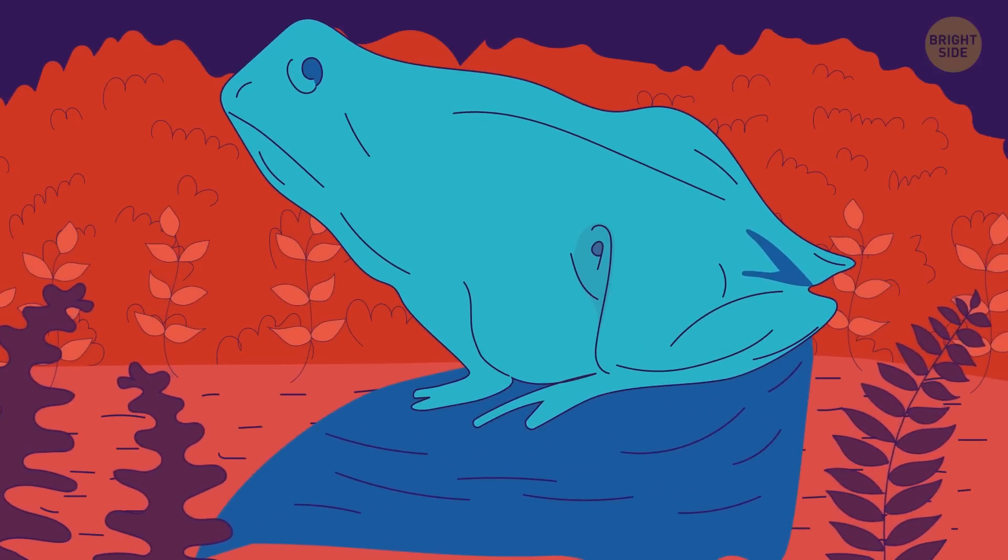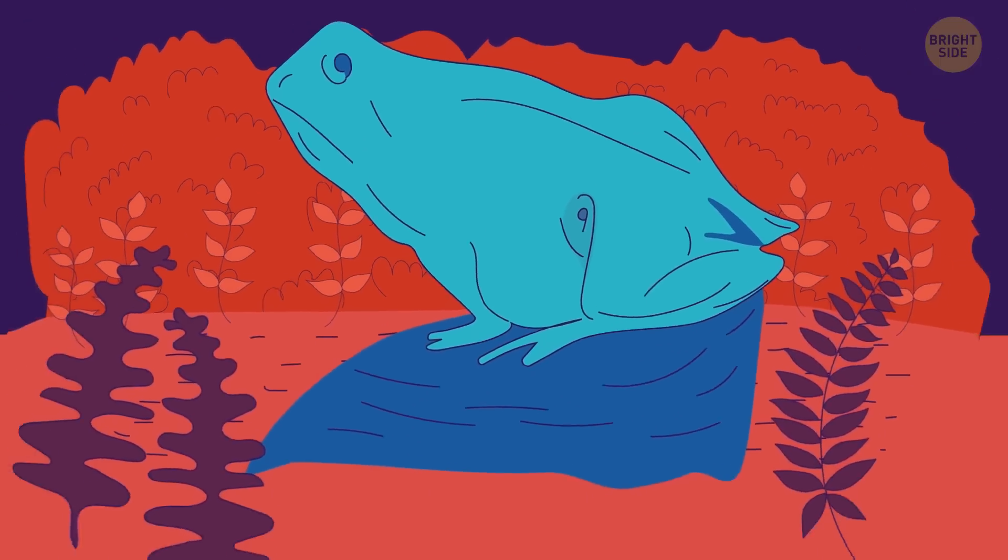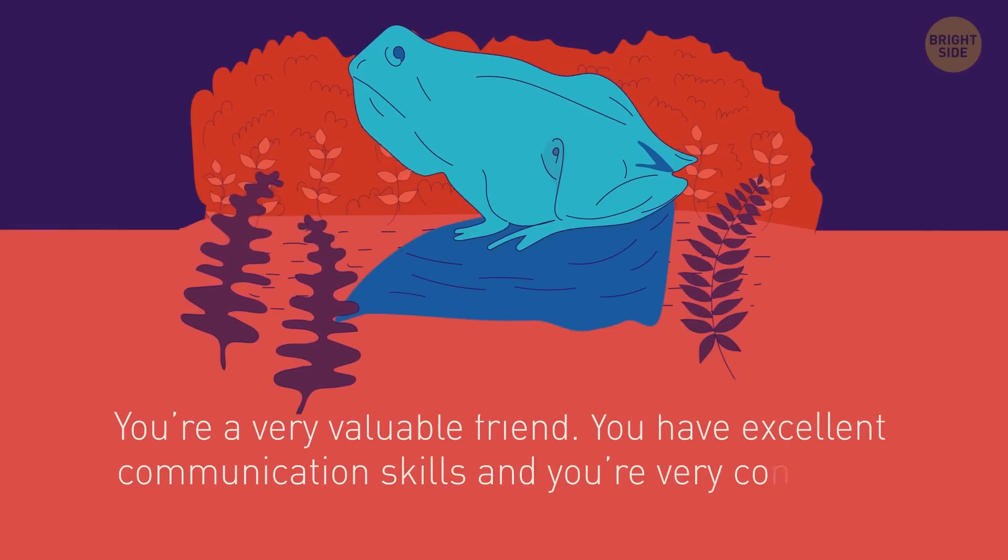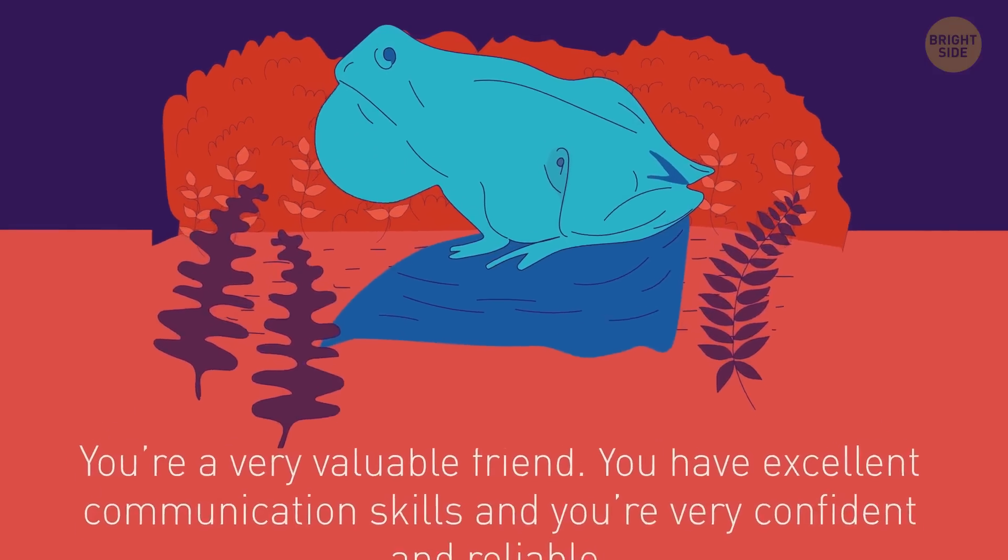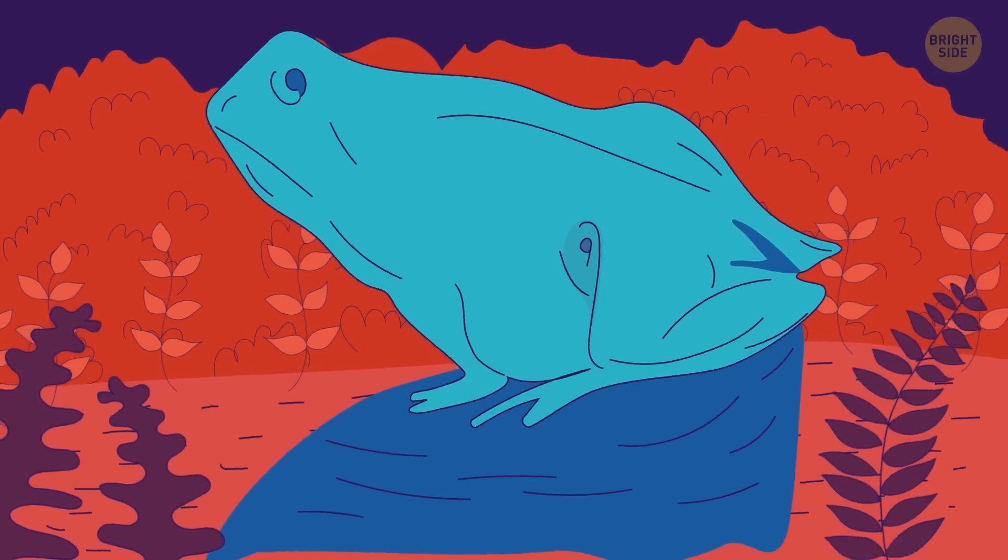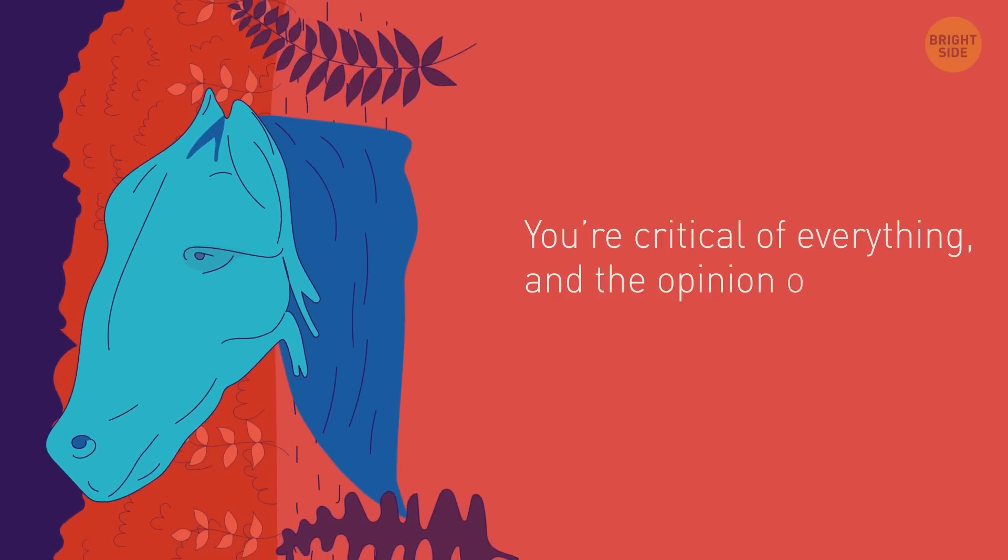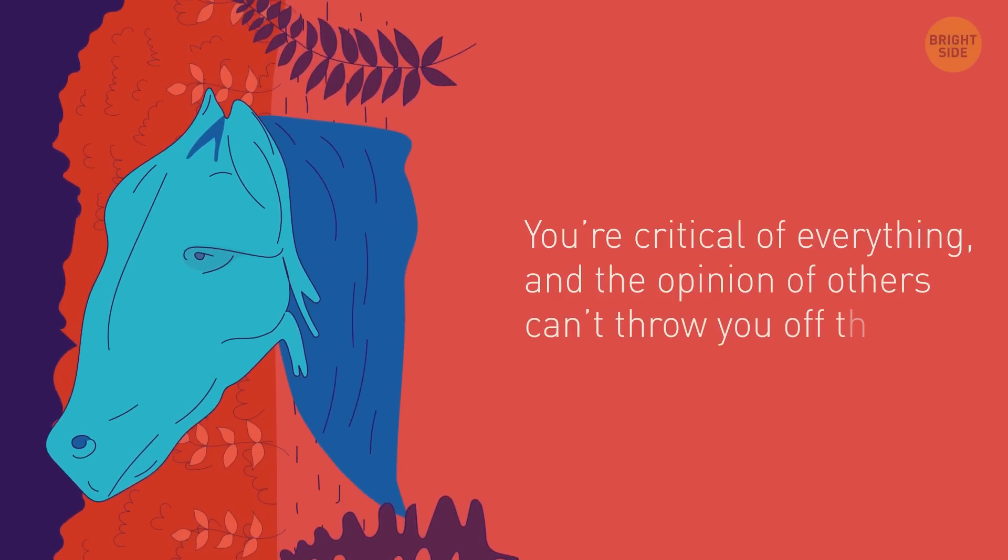Now, if you see a horse in this picture, you're a very valuable friend. You have excellent communication skills, and you're very confident and reliable. But if the first thing you saw here is the horse's head, it may mean you're critical of everything, and the opinion of others can't throw you off the path.